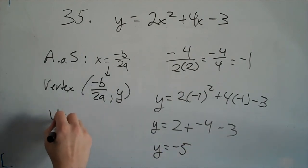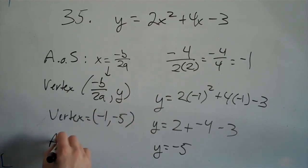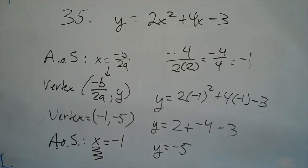So the vertex is negative 1, negative 5, and the axis of symmetry is x equals negative 1. Don't forget, x equals negative 1 is just a number, but the axis of symmetry is x equals negative 1.